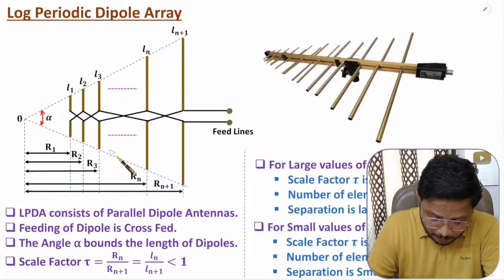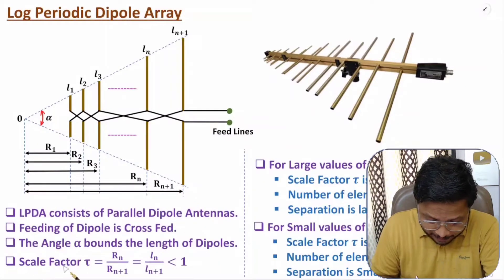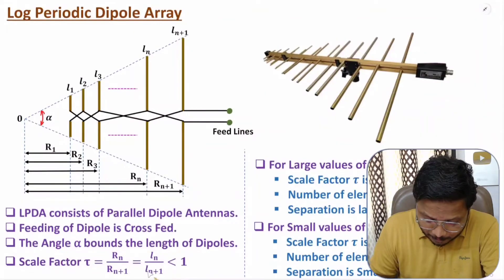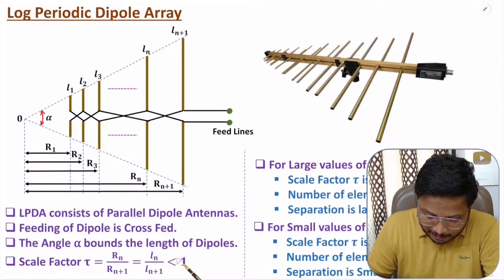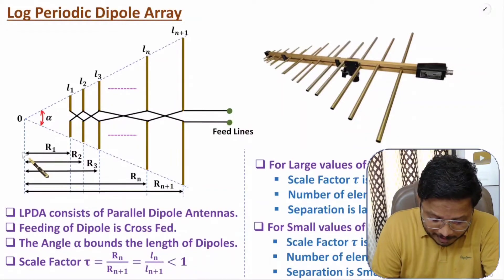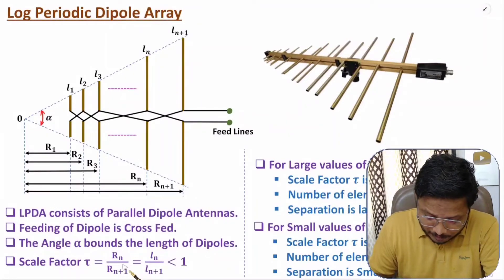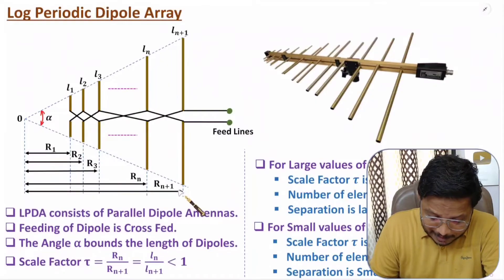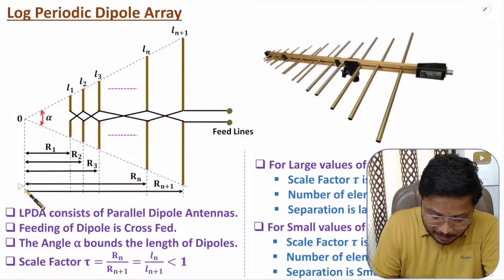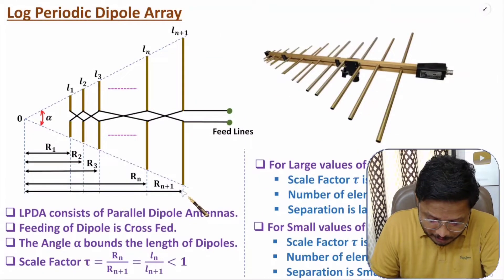Based on the length of the dipoles, there is one essential parameter called the scale factor, denoted as tau (τ). The scale factor is defined as Ln divided by Ln+1, which is always less than 1. It also equals Rn divided by Rn+1, where Rn+1 is the distance of the (n+1)th dipole from the origin and Rn is the distance of the nth dipole from the origin. So as length increases, spacing also increases accordingly.